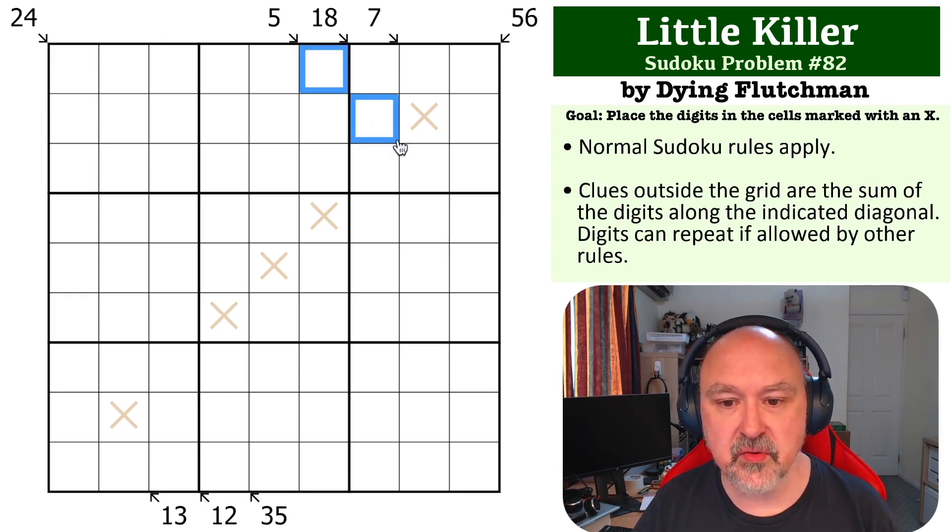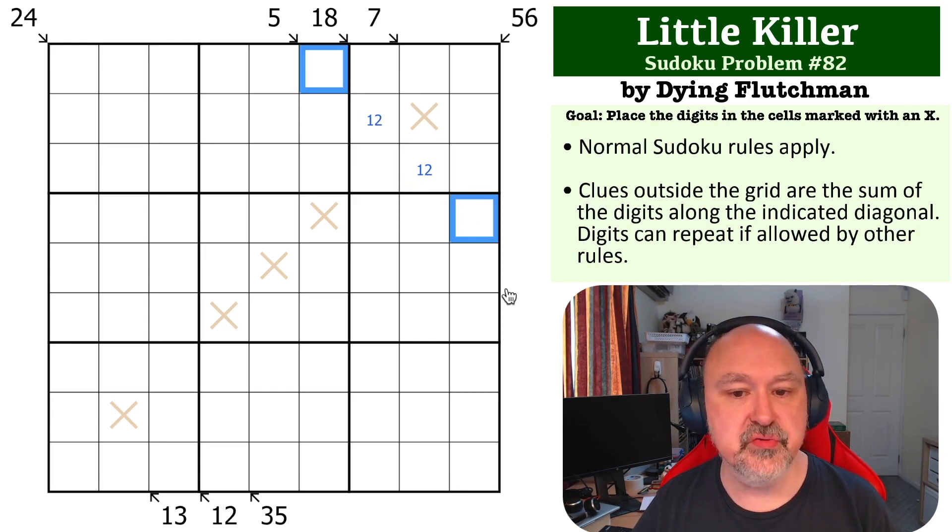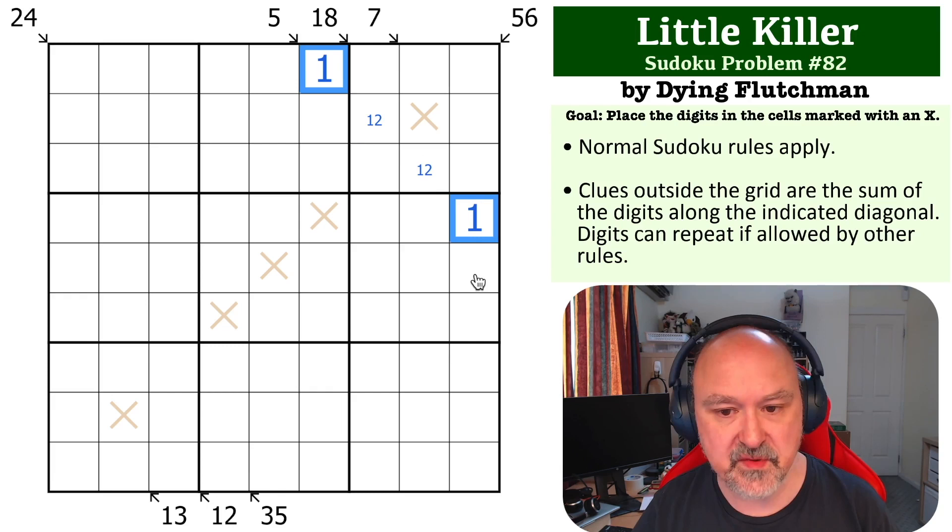Look at this 5 clue. If we pay attention, this 5 clue has to be minimum - the smallest we can put into these two cells are 1 and 2, which is 3. Now we've only got 2 to make up these two cells, so these both have to be 1.